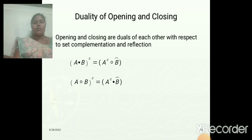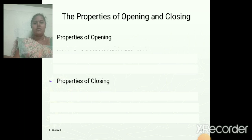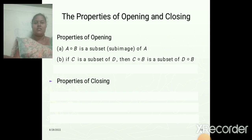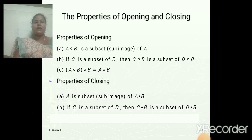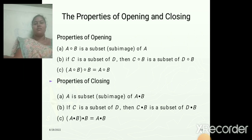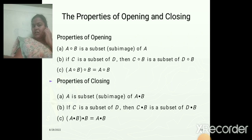This is another example for opening and closing operation. Opening and closing also have duality properties. The properties of opening are: A opening B is a subset of image A. If C is a subset of D, then C opening B is a subset of D opening B. Hence A opening B, opening B equals A opening B. The closing property is that A closing B of set A and B equals one-time closing of A using structuring element B.